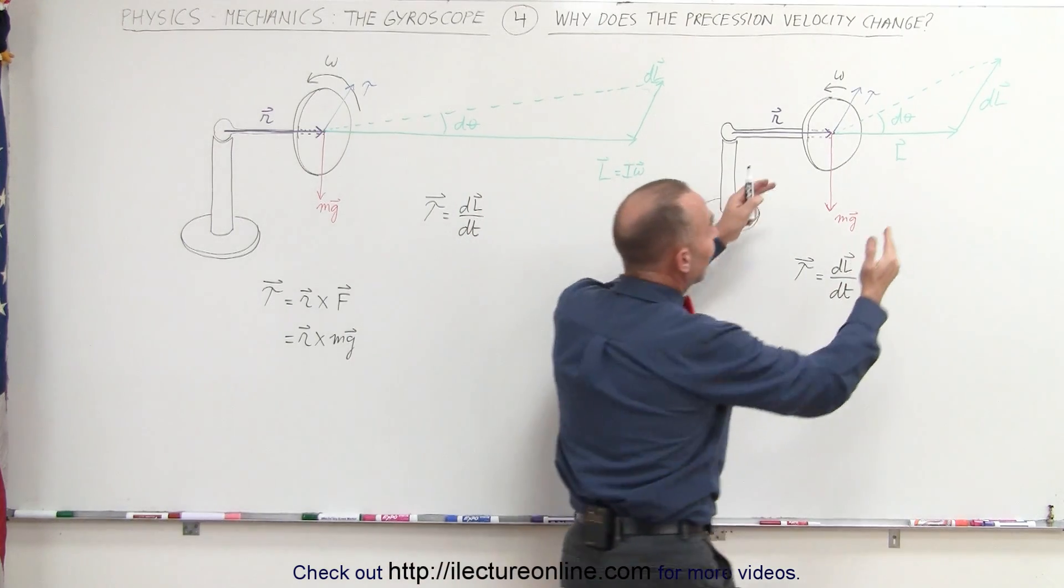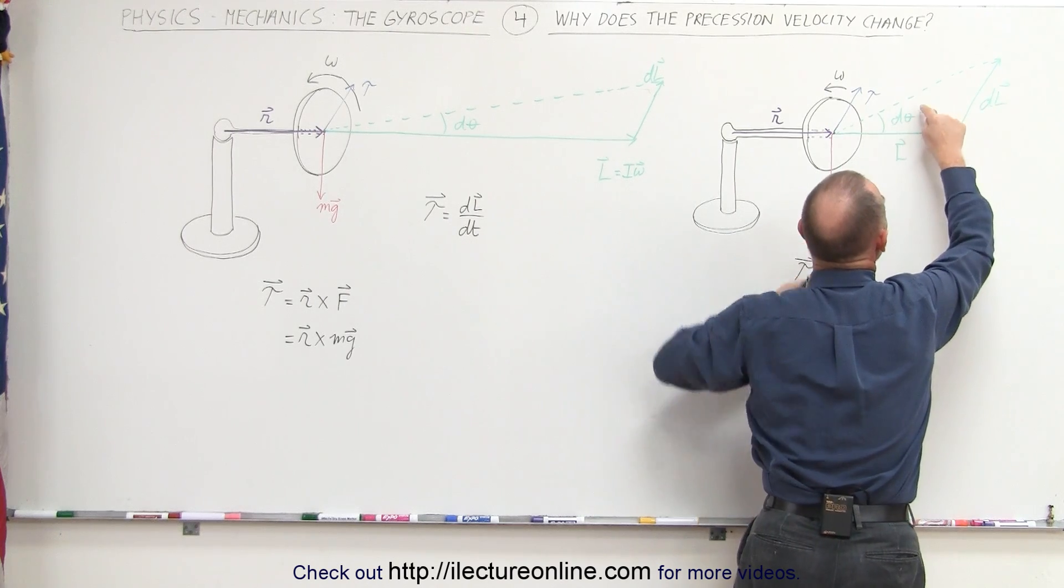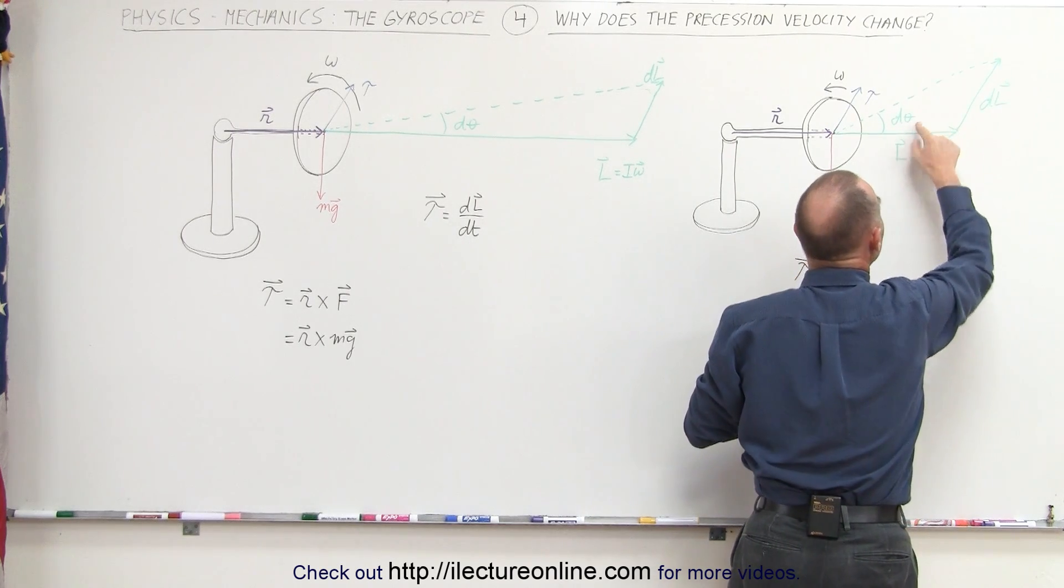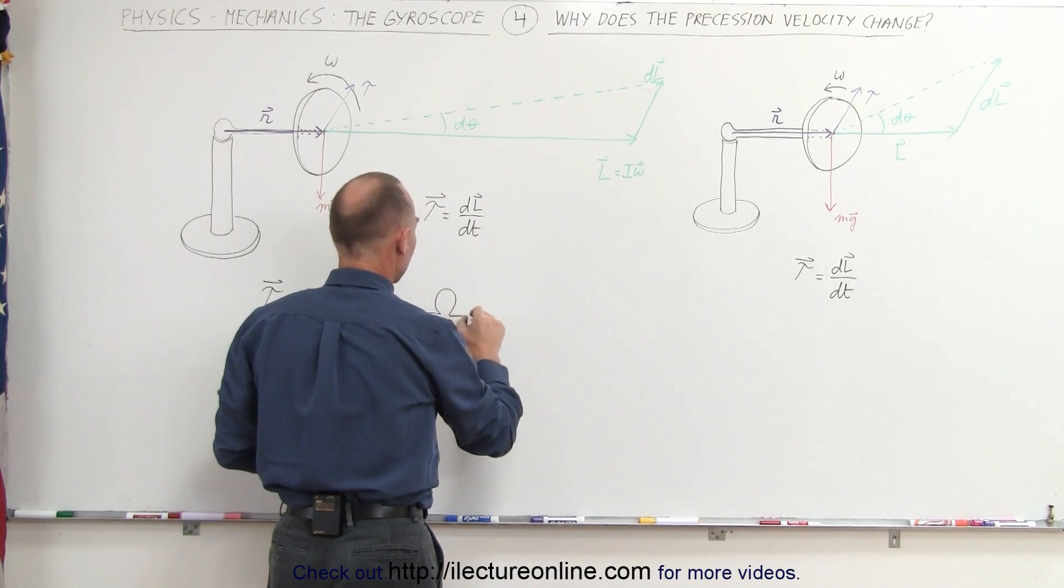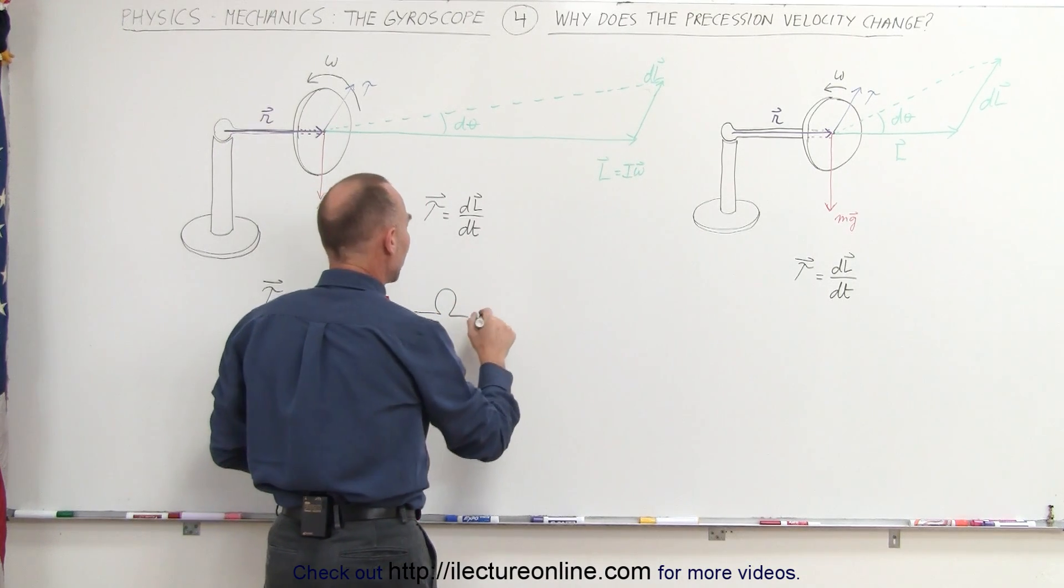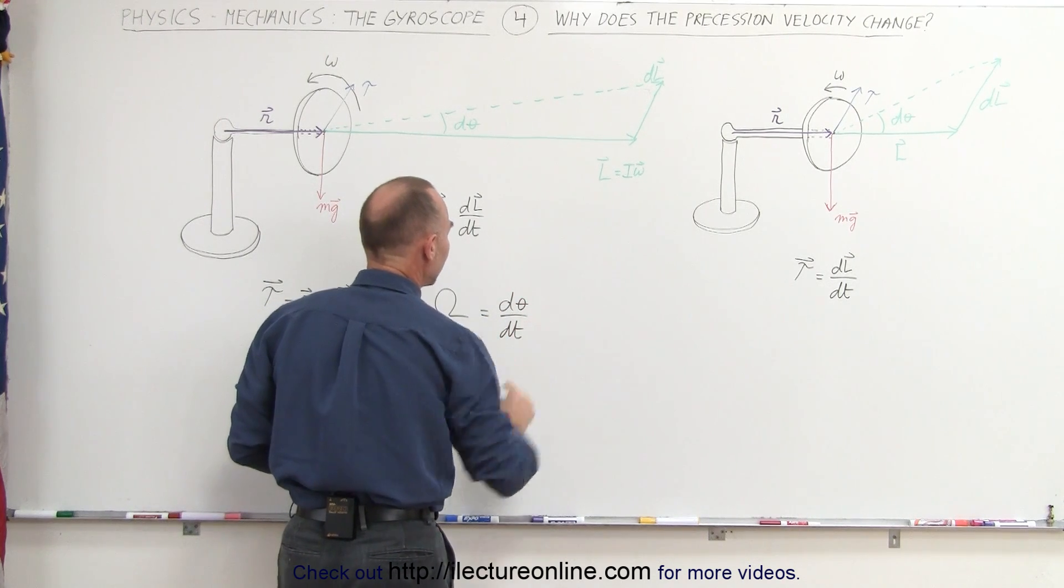Notice then, that if the angular momentum gets smaller, but dL remains the same, the dθ/dt becomes larger. And since the precessional velocity defined by capital letter omega is equal to the change in the angle with respect to time,